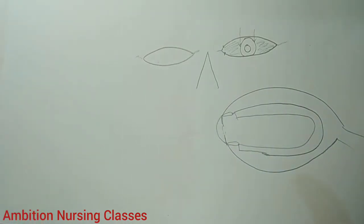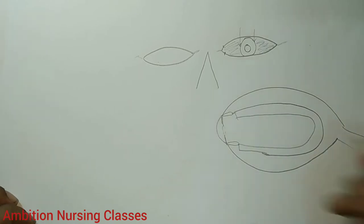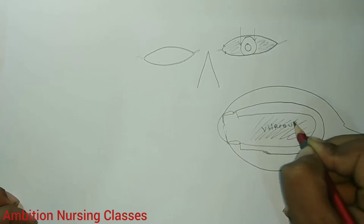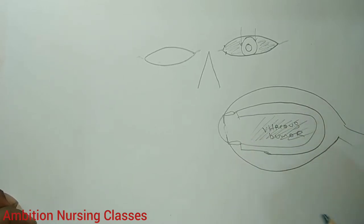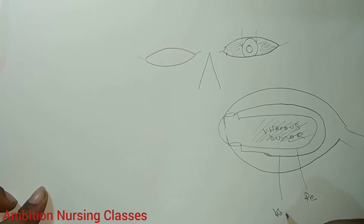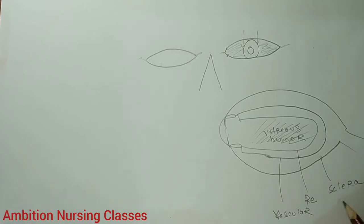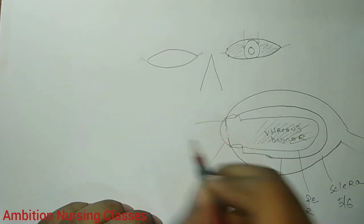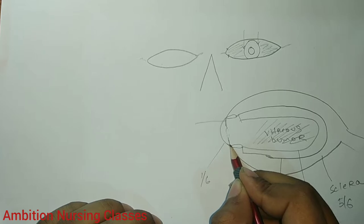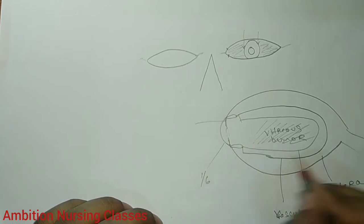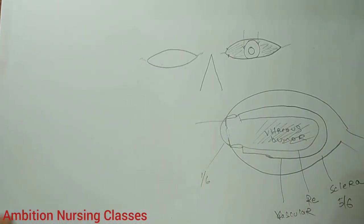This large part is filled with vitreous humor. This is your retina, this is your vascular layer, and this is your sclera. The sclera makes five-sixths and the cornea makes one-sixth of the outer coat. This is your iris, and remember this is the angle we are always worried about in glaucoma — the angle between the iris and the cornea. And this is your ciliary body.